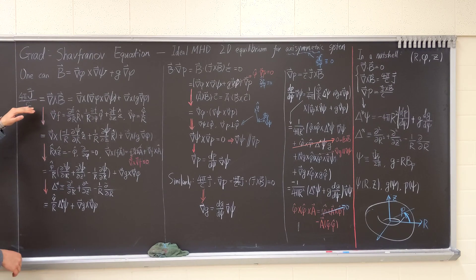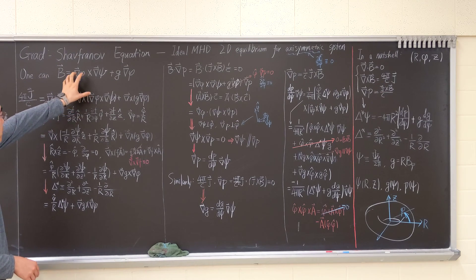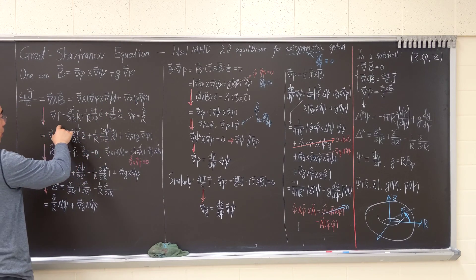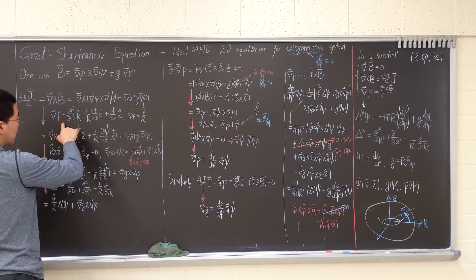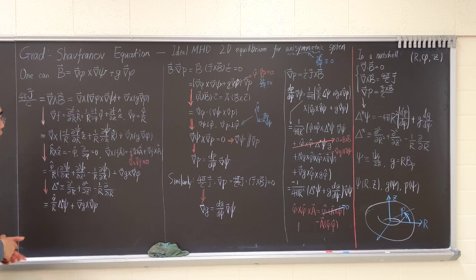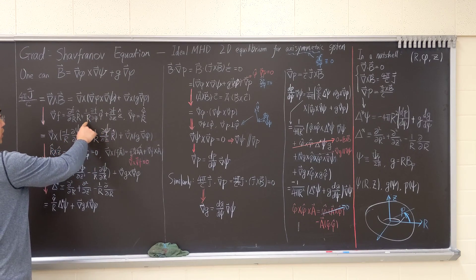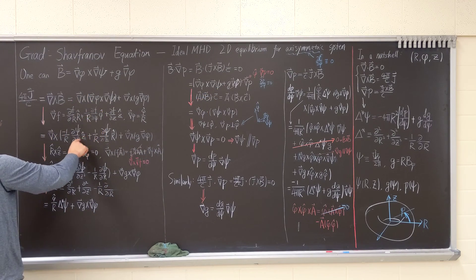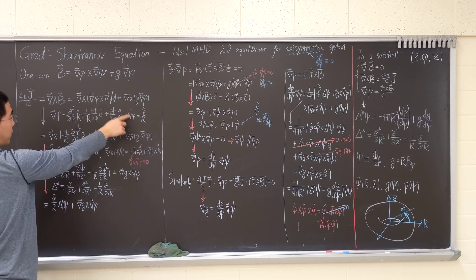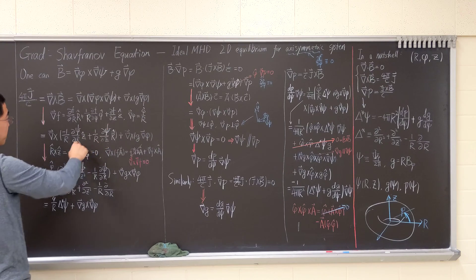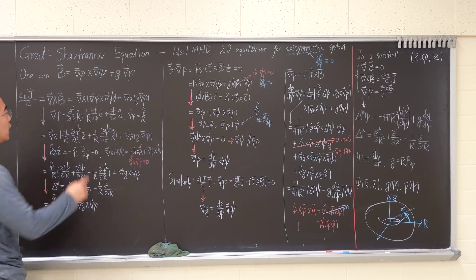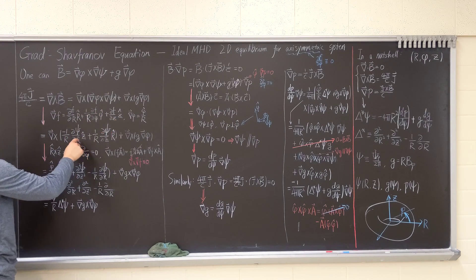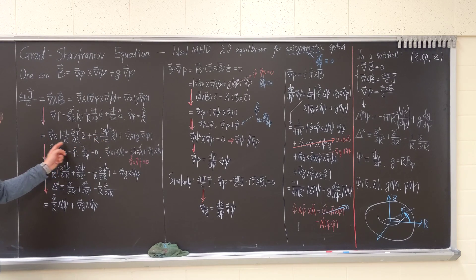Let's first start with Ampere's law. We substitute the magnetic field expression into here, so we have this plus this. We plug in the gradient for cylindrical coordinates. Since we're dealing with an axisymmetric system, d/dphi will be zero, and we're left with this. Since grad phi will be expressed as phi-hat over R, we have 1/R here, and phi cross R, phi cross R, and phi cross z will be negative z and R. So we have this expression.